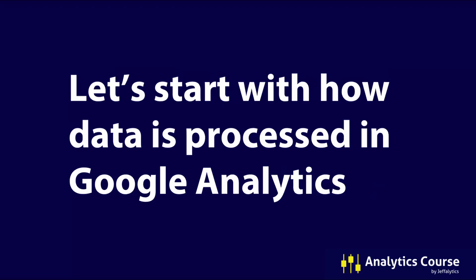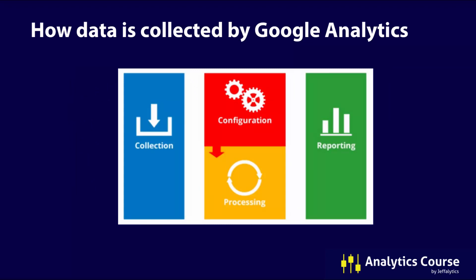We're going to talk about IP tracking in Google Analytics and the role of IP addresses in Google Analytics — what role they play in the collection of data, the display of data, and our overall process of using Google Analytics. Let's start with how data is processed in Google Analytics. Here's a picture I've been showing for years about how Google Analytics data is collected. There are four components: collection of data, configuration, Google processing the data, and then reporting.